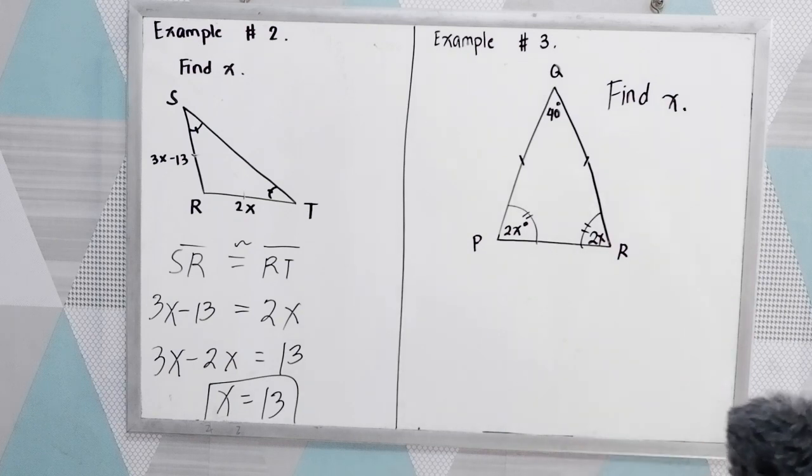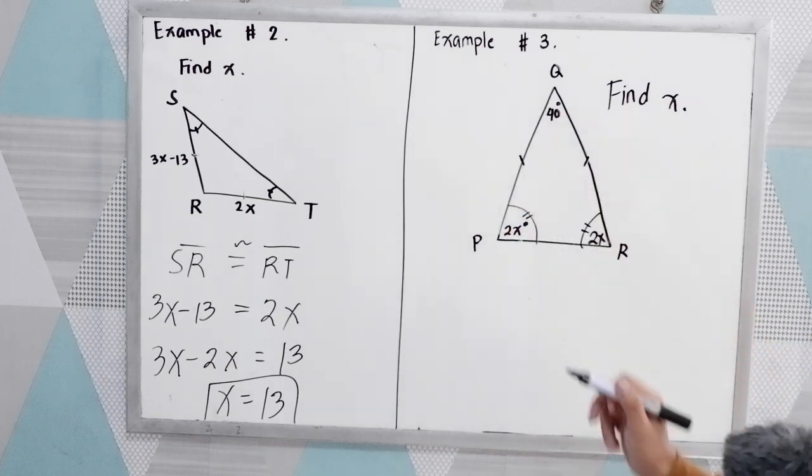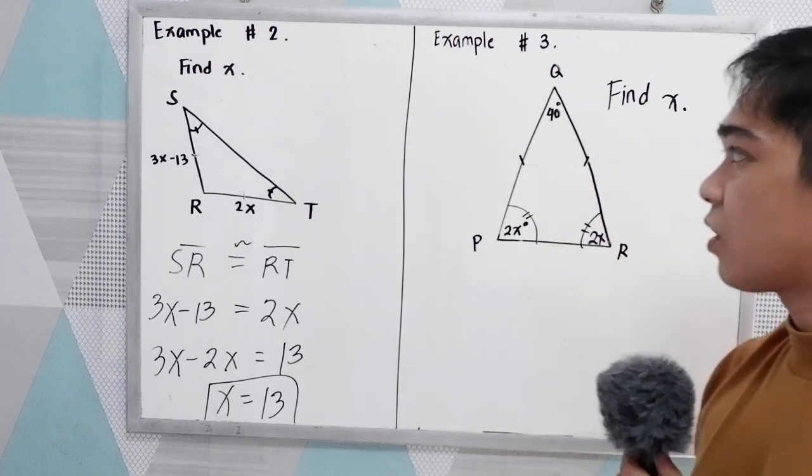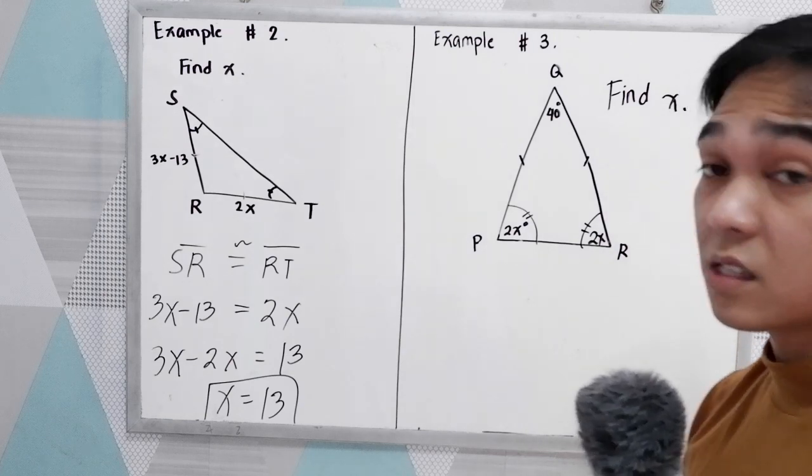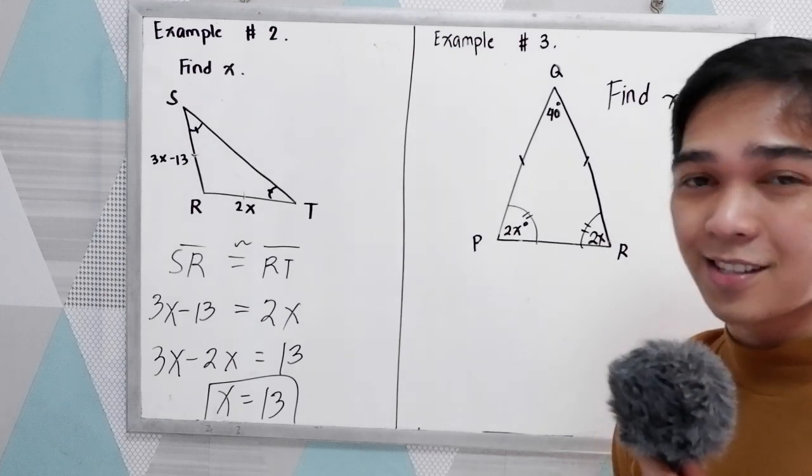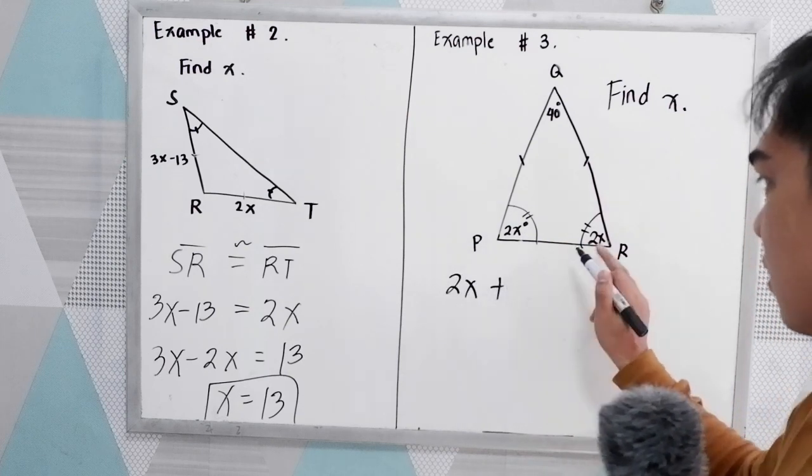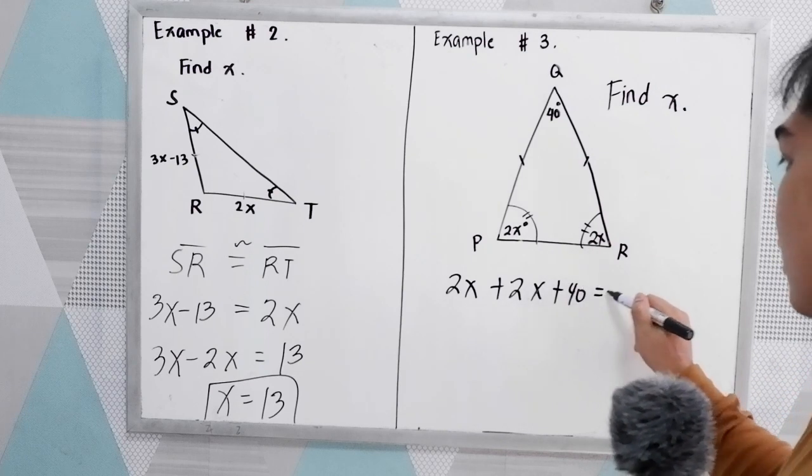We need to find 4X. So we have 3 angles. So we have the given. Then recall the definition of the sum of the interior angles. The sum of the interior angles is equal to 180 degrees. So if I were going to add 2X plus 2X plus 40, that is 180.